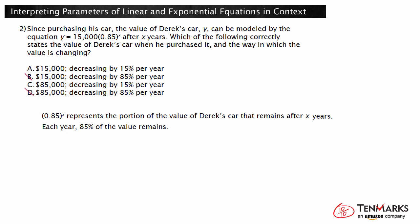The value x equals 0 represents the time Derek purchased his car. Substituting x equals 0 into the equation y equals 15,000 times 0.85 to the x power gives y equals 15,000 times 0.85 to the 0 power, so y equals 15,000. This means the value of Derek's car when he purchased it was $15,000. Now you know how to interpret parameters of linear and exponential equations in context. Thanks for watching!